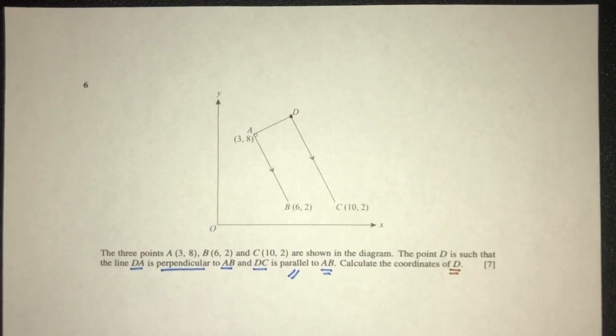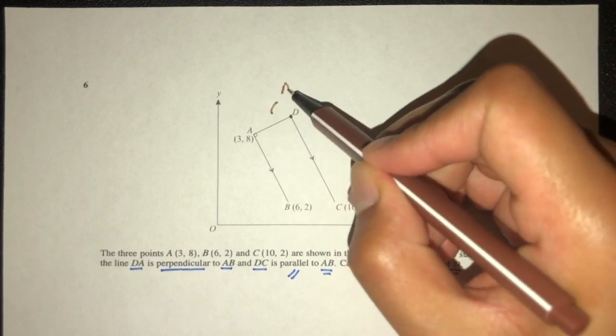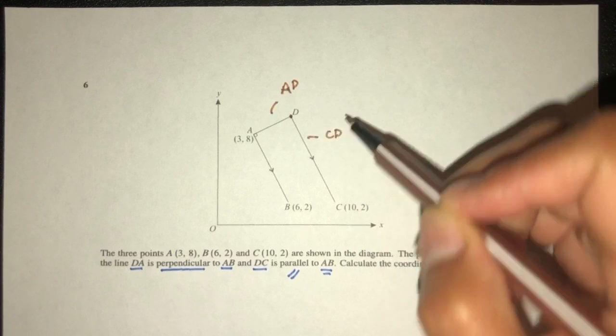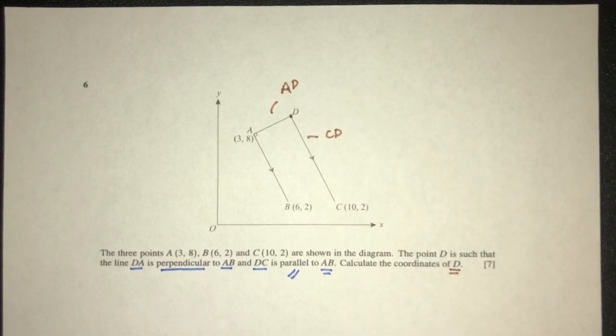We can clearly see that the point D is the point of intersection between the line AD and the line CD or DC. It is the point of intersection. To find this, we obviously have to solve two equations simultaneously because it is a point of intersection. Now, let's first find the equation of AD.